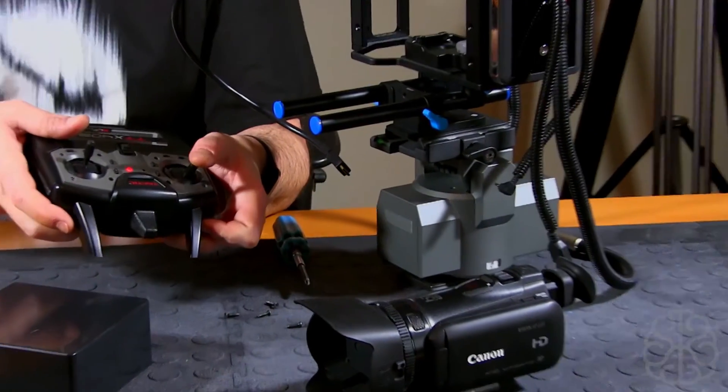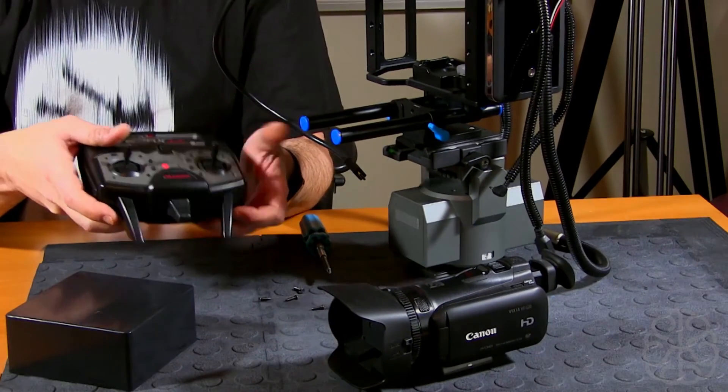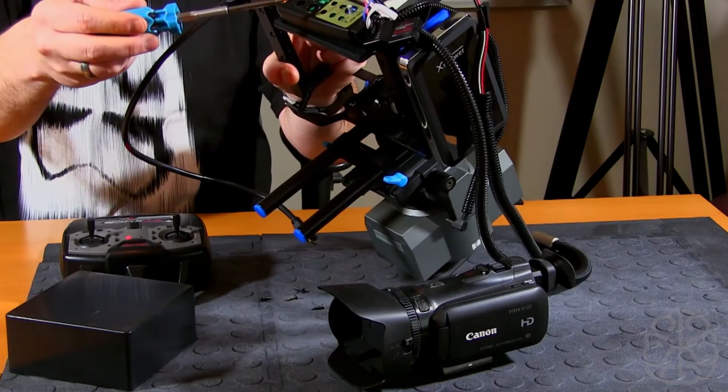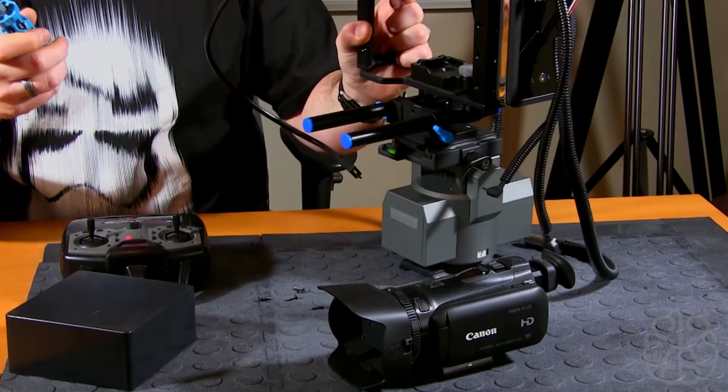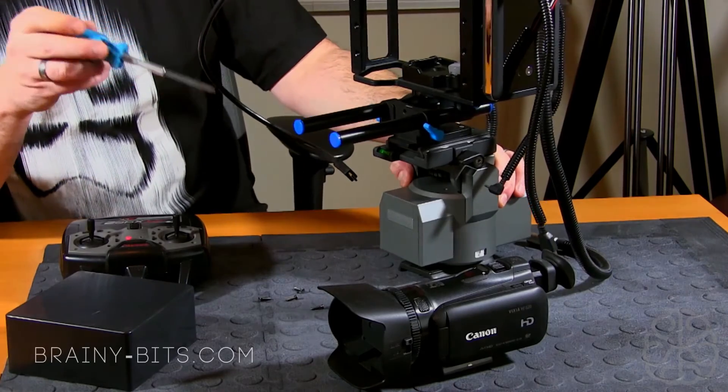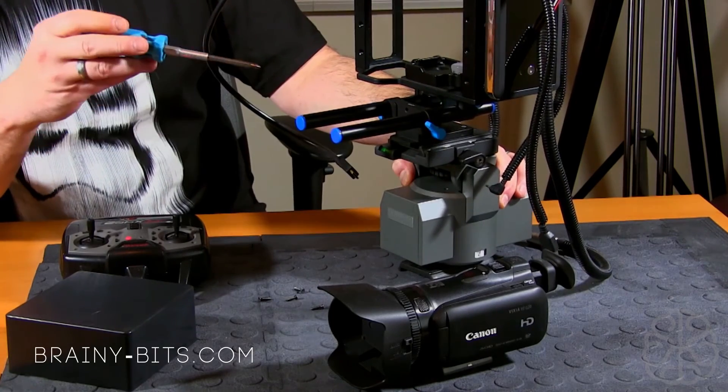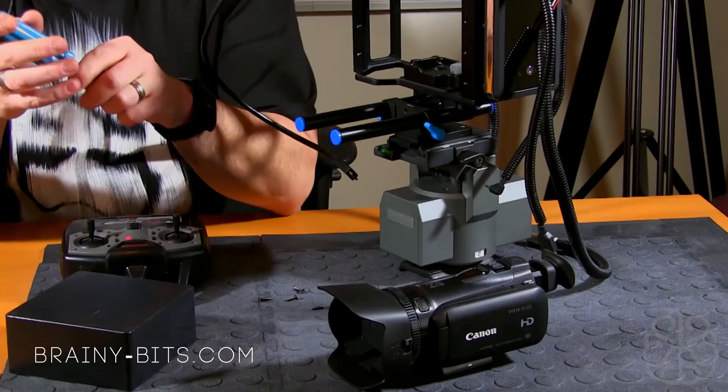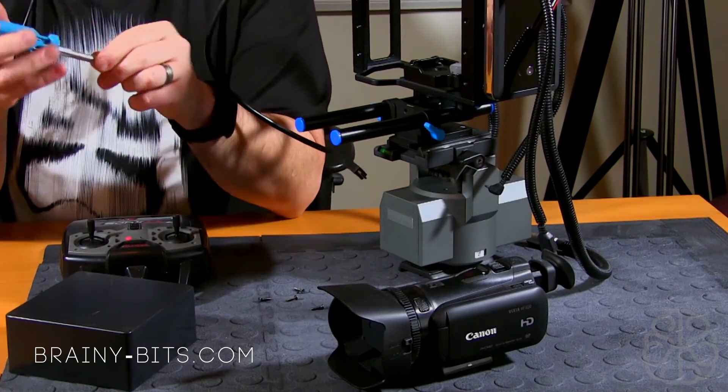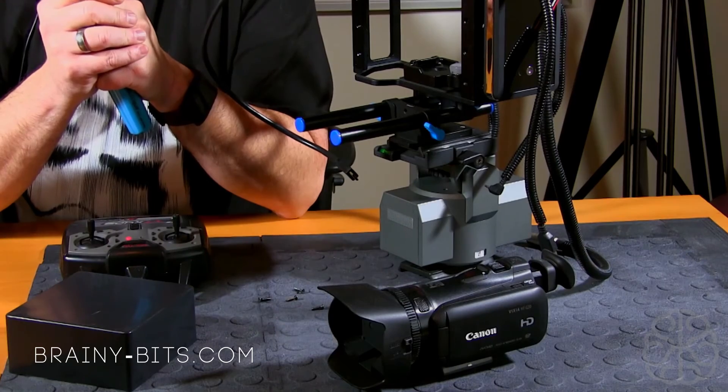We're going to look at the code on the nano and see how that all works. We're reading the RC receiver, and depending on the values we're getting, we're doing a motion, whether it be up, down, left, right, and the zoom function. Once again guys, my name is Ivan from BrainyBiz.com, take care.